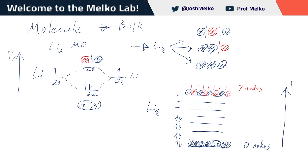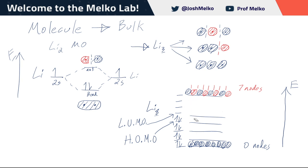To introduce some terminology: this is still an energy scale, increasing vertically. We have a special name for a couple of these molecular orbitals. This one right here is the highest occupied molecular orbital, and this next one is the lowest unoccupied molecular orbital. The gap between these two — between the HOMO and the LUMO — is called the HOMO-LUMO gap.